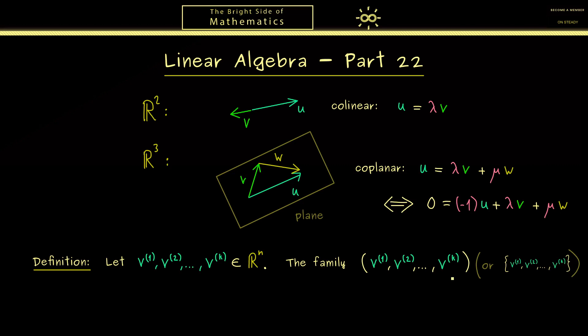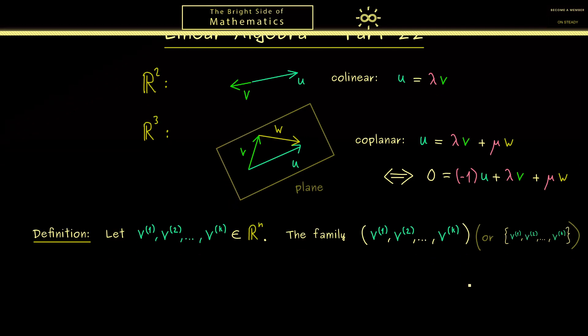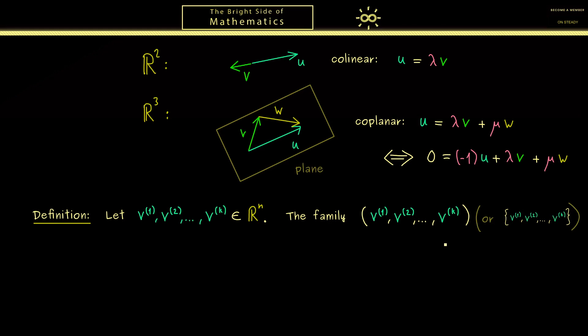Okay, and now this family here is called linearly dependent if we find a non-trivial linear combination for the zero vector. More precisely, this means we have a linear combination like this above where the coefficients are not just zeros. Of course, with zeros this would not be exciting at all, because there it would always be possible to get to zero.